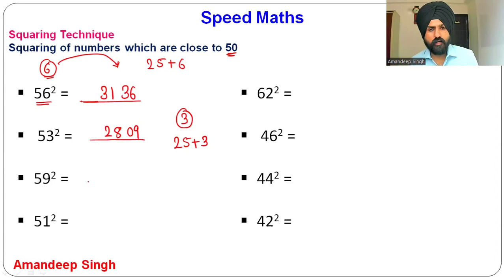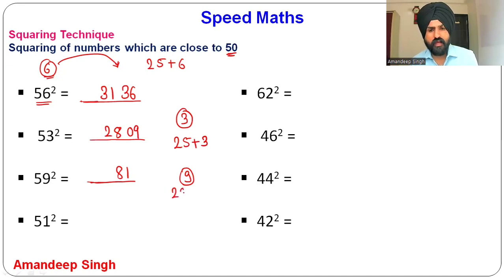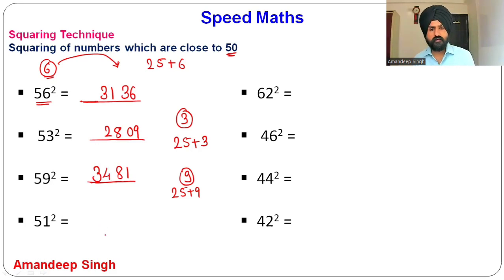For 59²: this number is 9 more than 50. 9² = 81, so write 81 at the end. 25 + 9 = 34. So 59² = 3481.